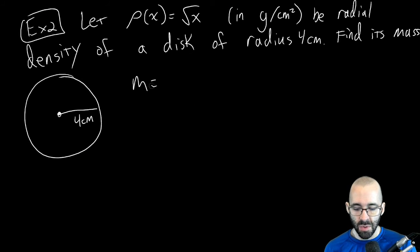The total mass - we know how to find it, we just use the formula. The total mass, because we have radial density, is going to be 2π times the integral from zero up to its radius, which is four centimeters, times x times the density.